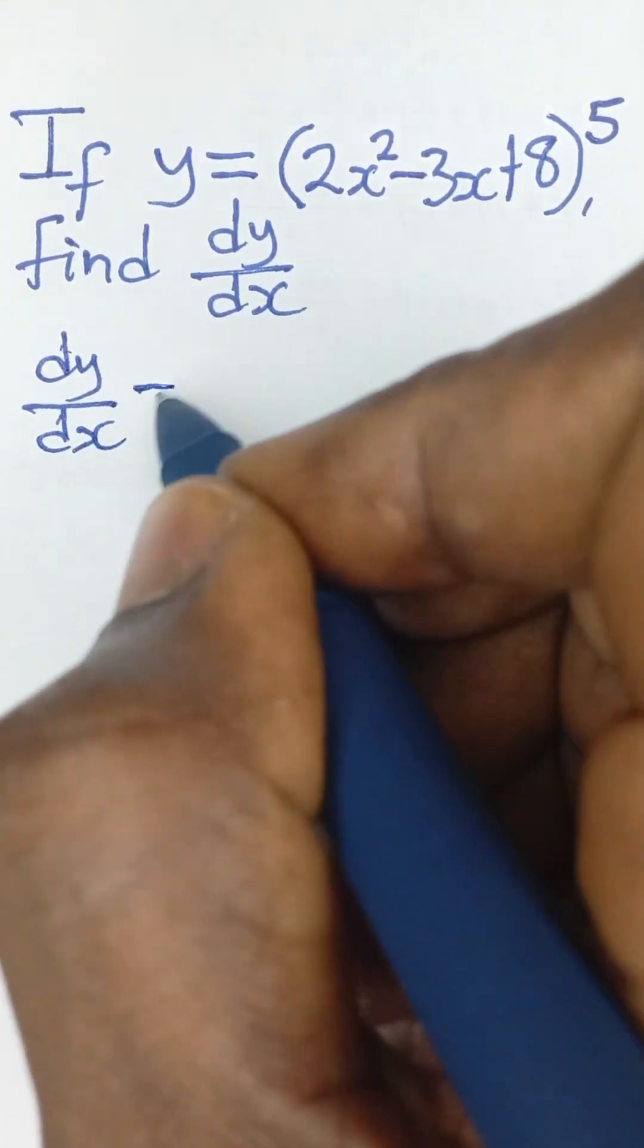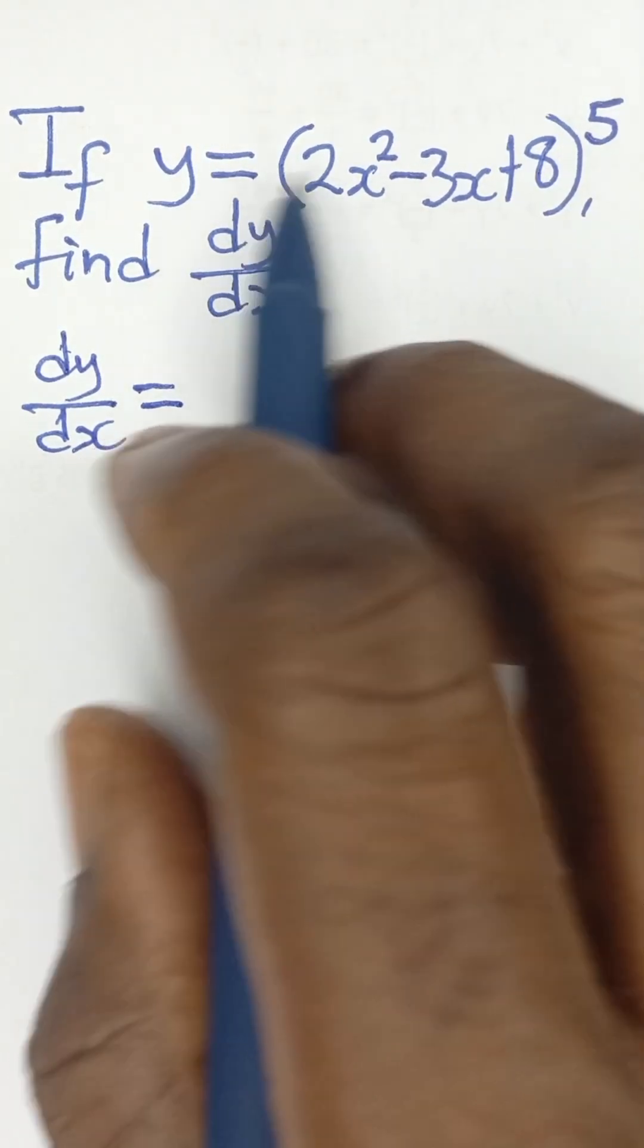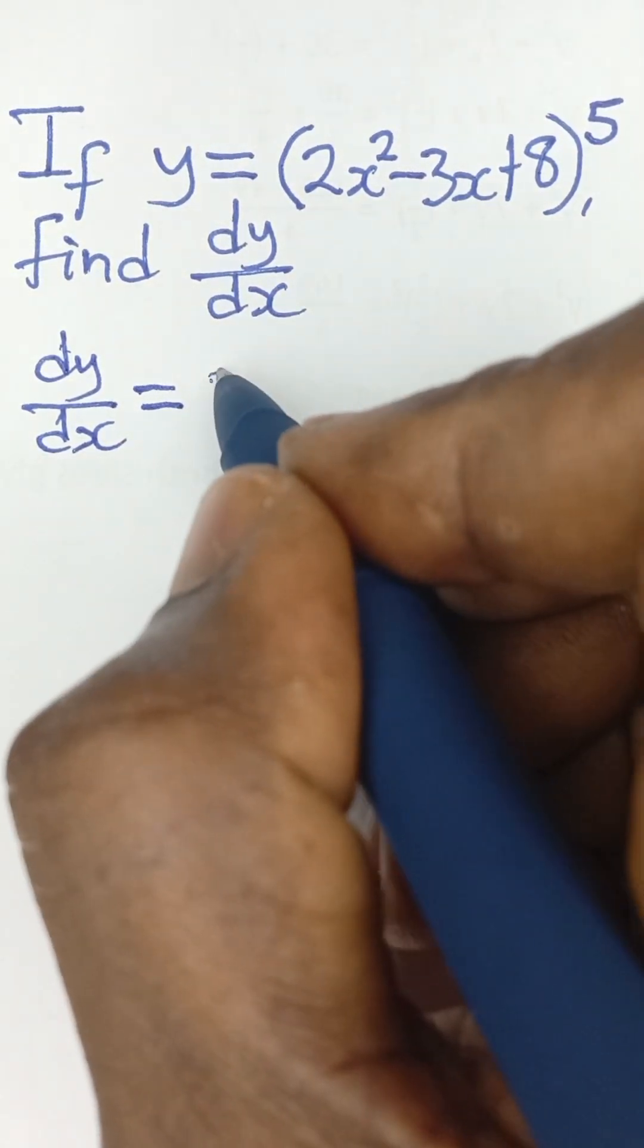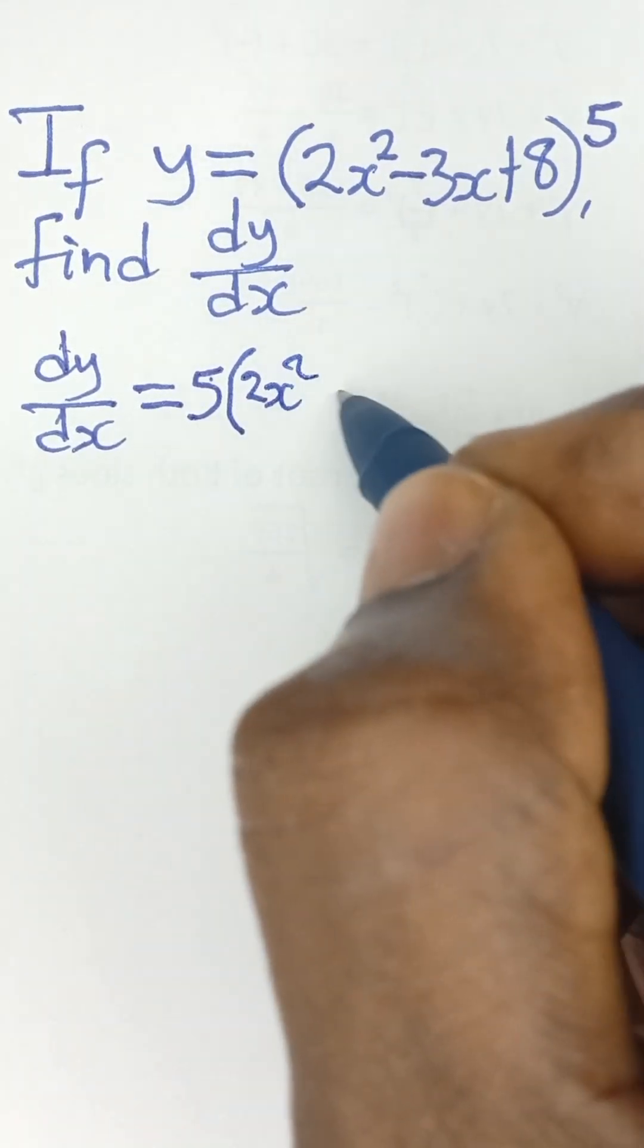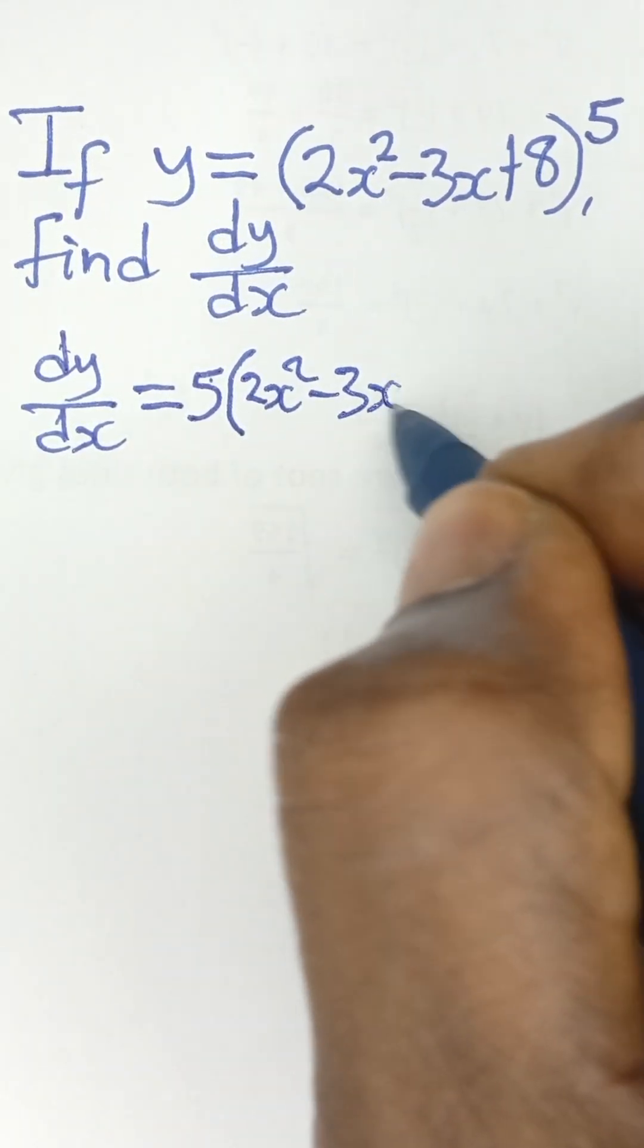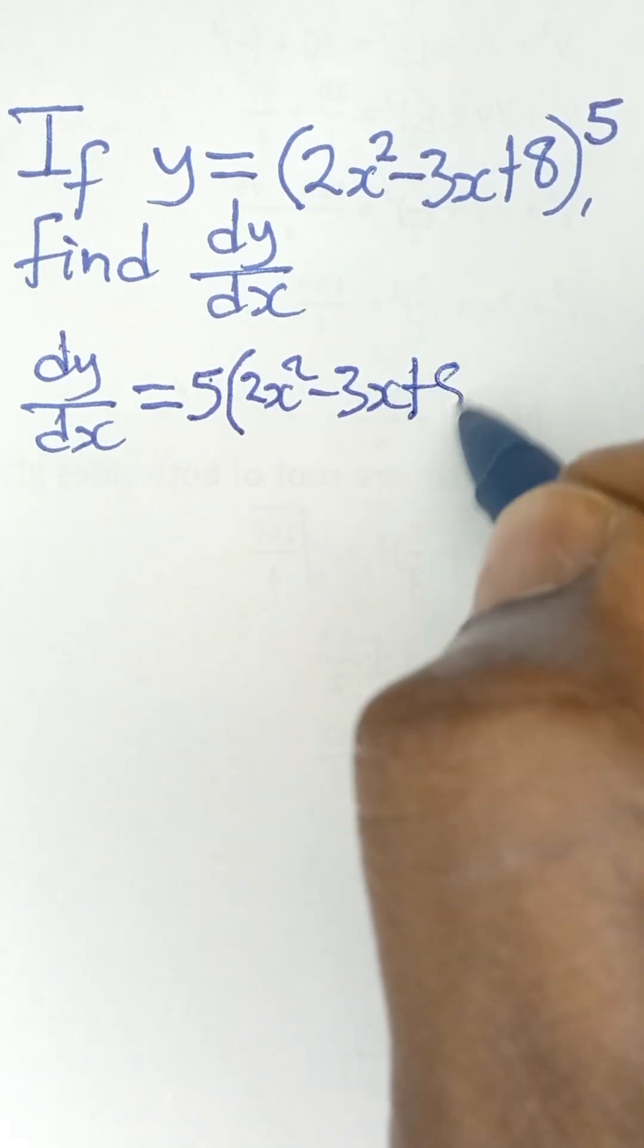is equal to the 5 that is here used to multiply this. So it becomes 5, then multiply by 2x squared minus 3x plus 8.